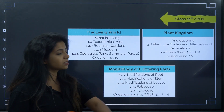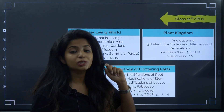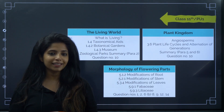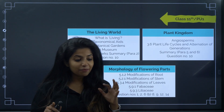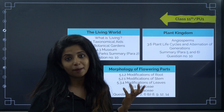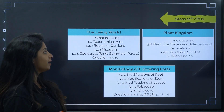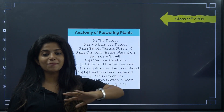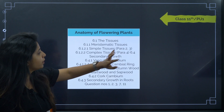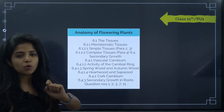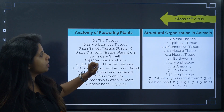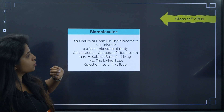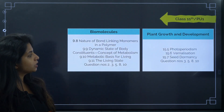In 'Morphology of Flowering Plants,' the Fabaceae family, Liliaceae family, and modification of roots, stems, and leaves are deleted. Children, just imagine — if they're being very specific about what is deleted, there are many questions that could arise from the remaining portions, so be careful. In 'Anatomy of Flowering Plants,' meristematic tissue, simple tissue paragraphs 2 and 3 are deleted. 'Structural Organization in Animals,' 'Biomolecules,' and 'Plant Growth and Development' also have deletions.